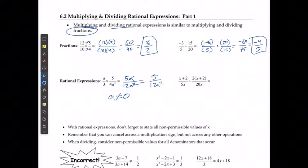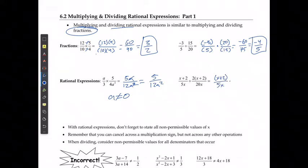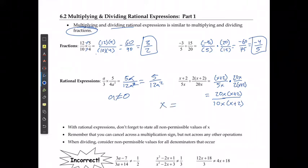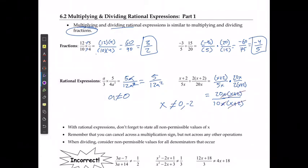For the next example, I'm going to say that y(x+2) over 5x, and now I'm going to multiply by the reciprocal, which gives me 20x over 2(x+2). I can multiply this to get 20x(x+2) on the top, and 10x(x+2) on the bottom. It's already in factored form, so x cannot equal 0 or negative 2. I can cancel the x on top and bottom, the (x+2) on top and bottom, and then divide 20 by 10, giving me just 2.